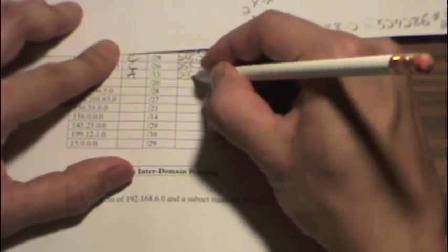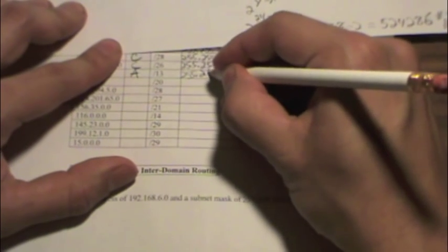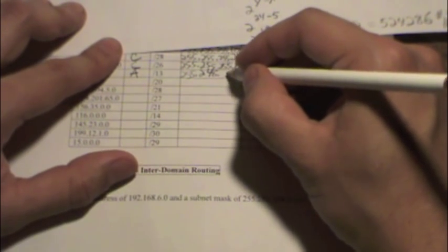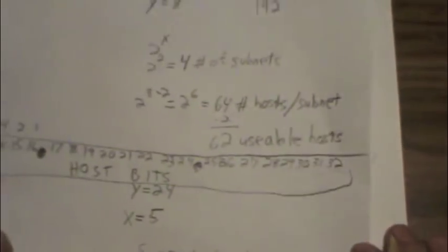Alright, so we have 255.248.0.0, and the number of subnets is 32, and the number of hosts per subnet was 524,286.